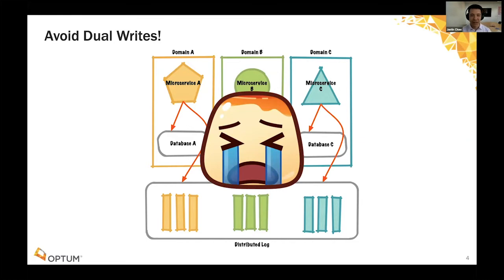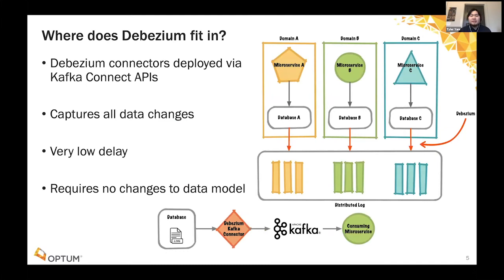Yeah, so Debezium deploys or uses a set of connectors that are deployed via the Kafka Connect API and so it's able to get access to a database's write-ahead logs and capture all the data changes and then send it to Kafka or distributed logs as change events. The great thing about this is that Kafka has a lot of different connectors that also can consume it and so you're able to add these consuming microservices. We're able to avoid the dual write issue because now a domain or a microservice only has to worry about publishing to their own database because the Debezium connectors are able to capture these data changes at a pretty low delay. It has a different set of connectors that supports most of the open source databases out there.